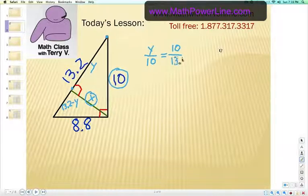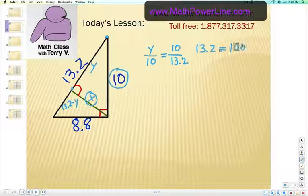And the other place is the entire hypotenuse, which we already know is 13.2. So we go ahead and cross-multiply, and that would be 13.2 times y equals 100, because that's 10 times 10. Now we divide each side by 13.2.